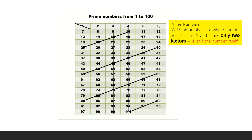Next, the last column: it's 6 and its multiples. Cross out all the multiples of 6.